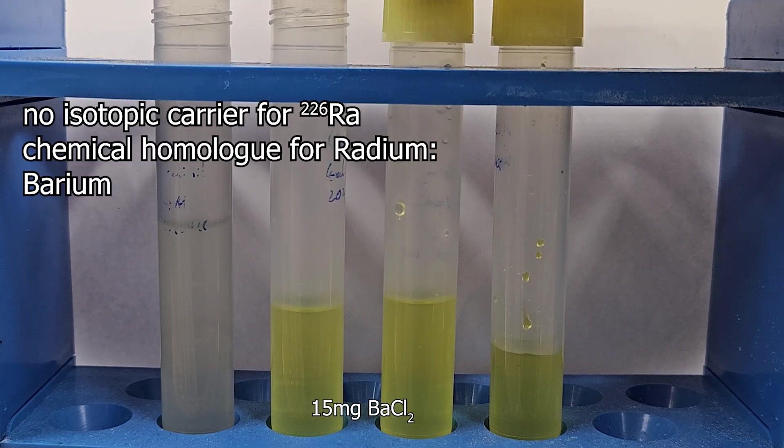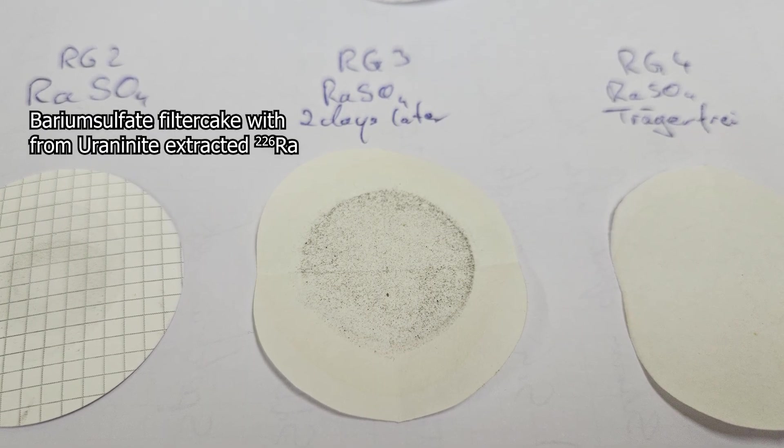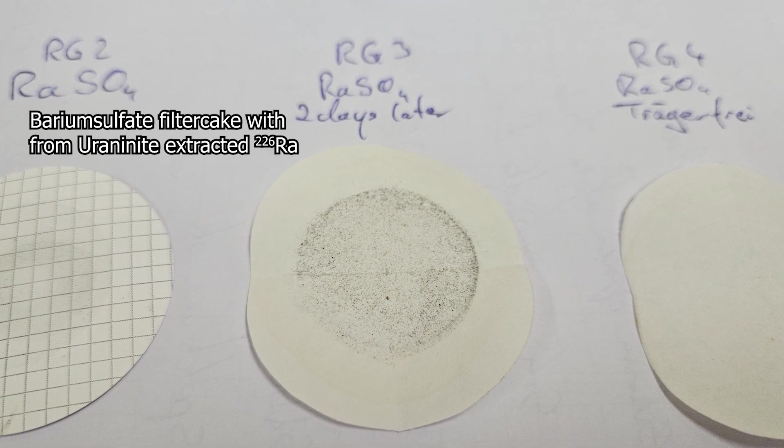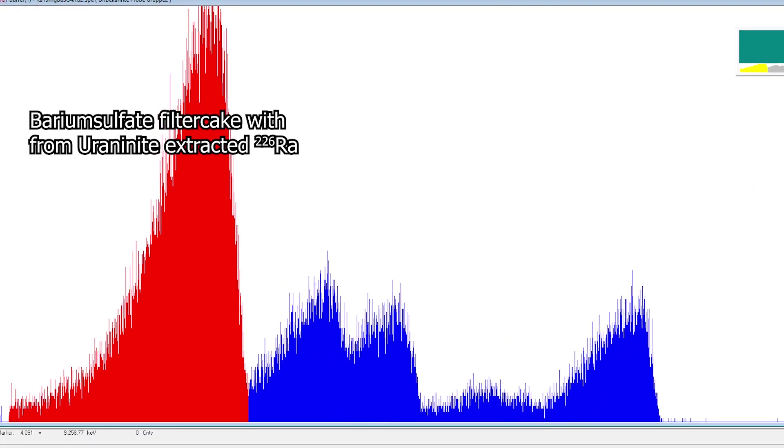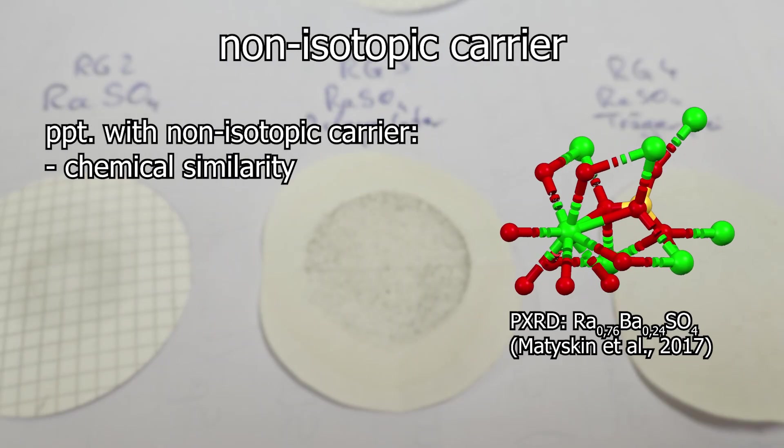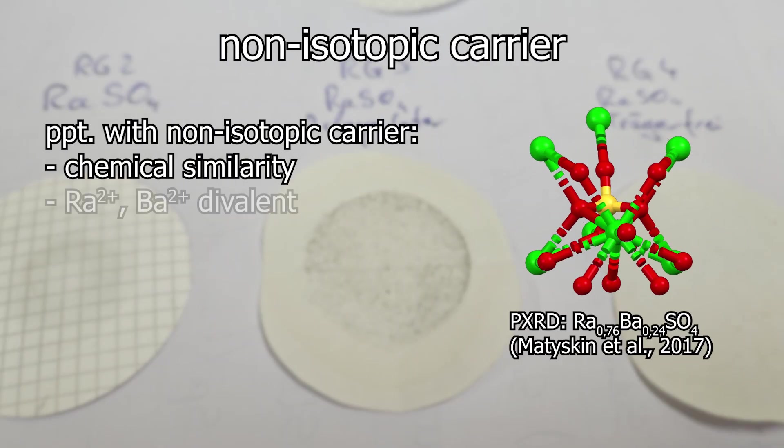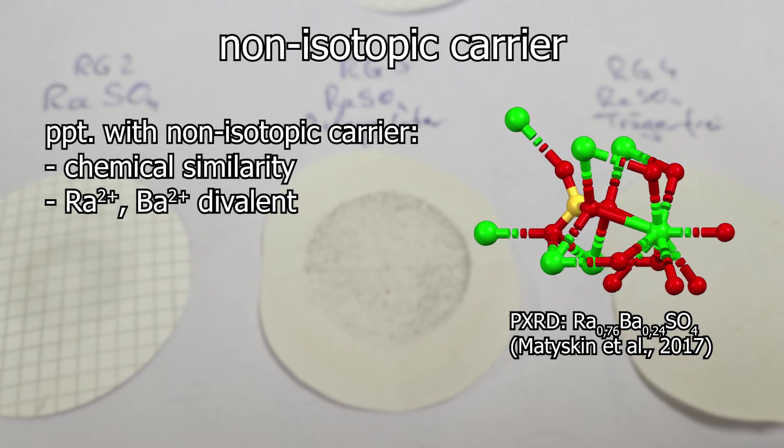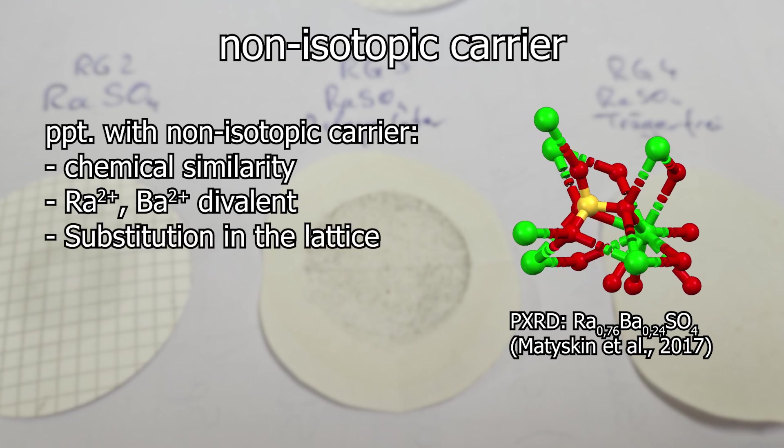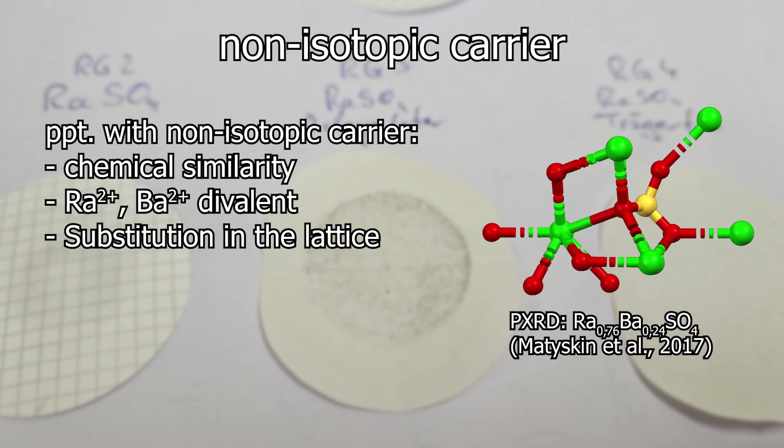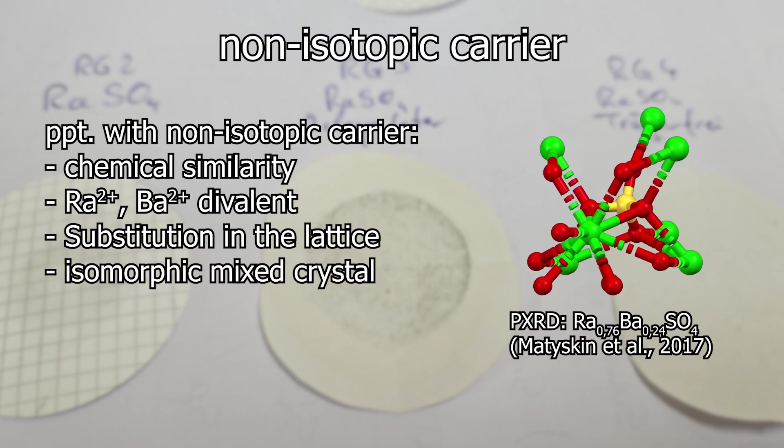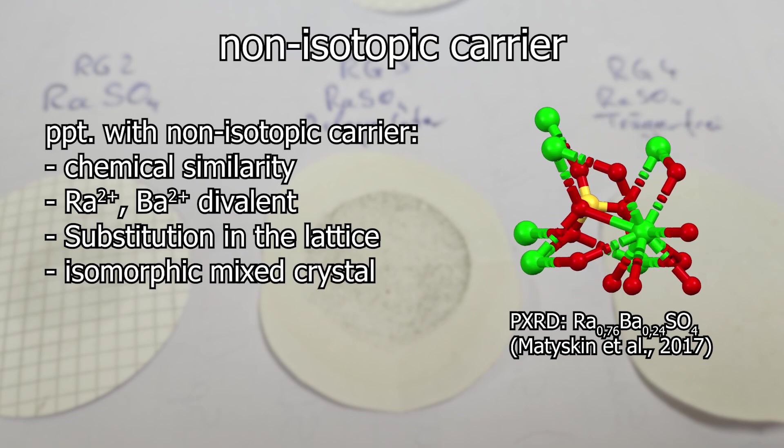We are now talking about non-isotopic carriers here. In the end, a mixed radium-barium sulfate precipitate is obtained. This works very well, as can be seen from the spectrum. Why? Radium and barium are so similar that radium can sometimes take up places in the sulfate lattice on the behalf of barium. This is a so-called co-precipitation.